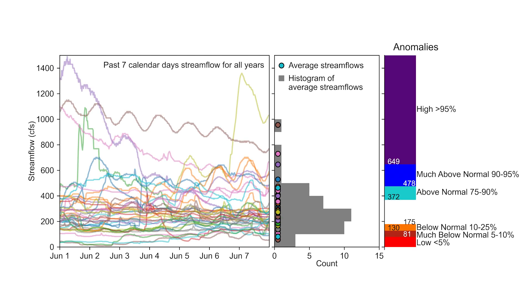Threshold streamflow ranges are extracted from this distribution, which can then be compared with the current streamflow to deduce the streamflow anomaly.